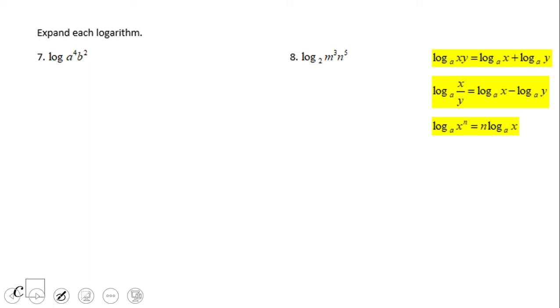So now we're gonna go backwards, we're gonna expand. So what we're gonna have here, we're gonna have log in base 10. You don't have a base, it's base 10. A to the 4th power plus log in base 10 of b squared.